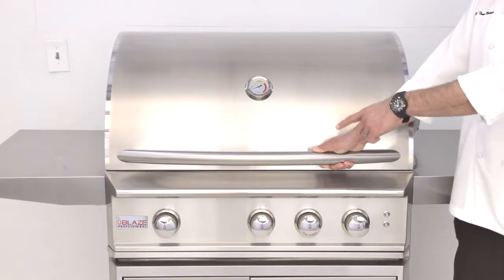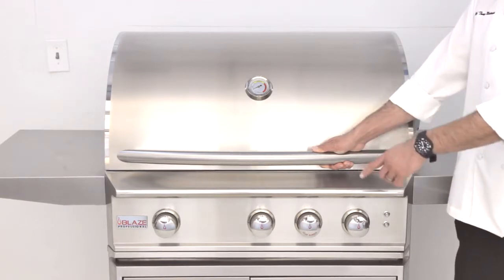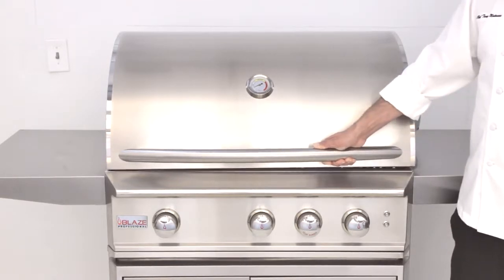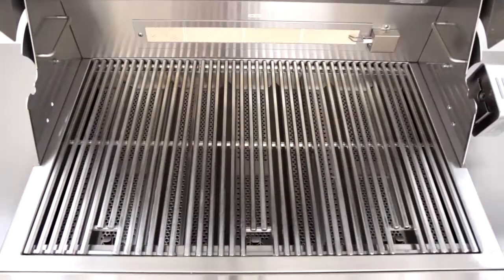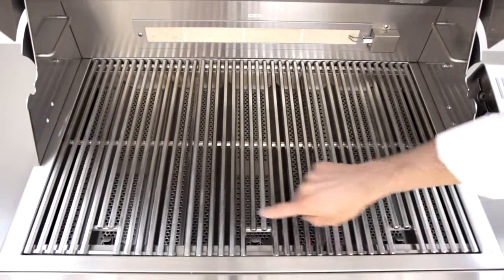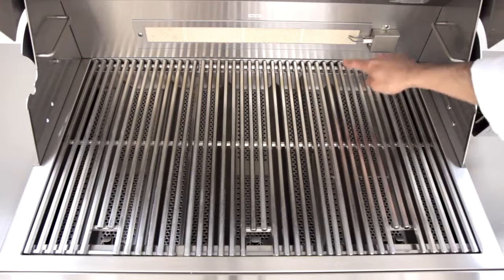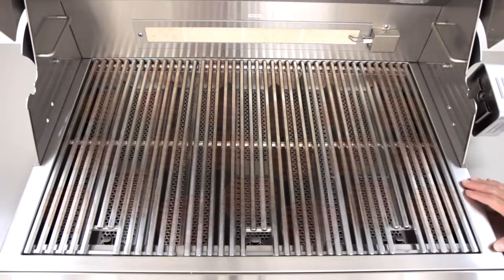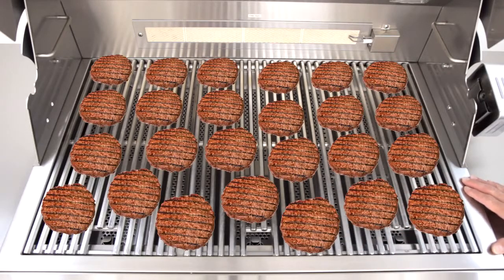This is the Blaze Professional Gas Grill. Let's have a look inside. The cooking grids measure 30 ¾ inches wide by 20 inches deep, and can grill up to 25 4 inch round hamburgers at a time.